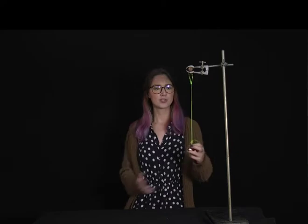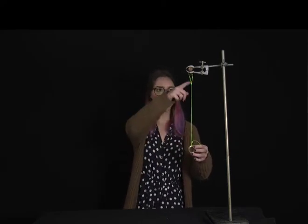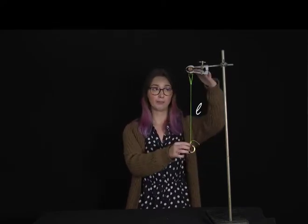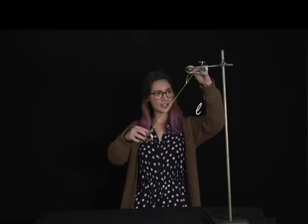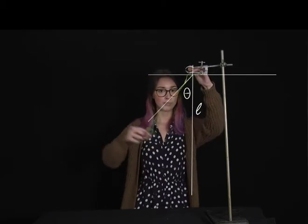So a more natural system for a pendulum is to think, well I'm always a distance L, length of the string, away from my origin, and really it's just the angle to the vertical that changes.